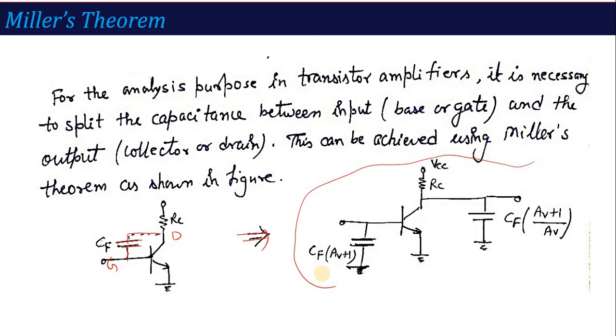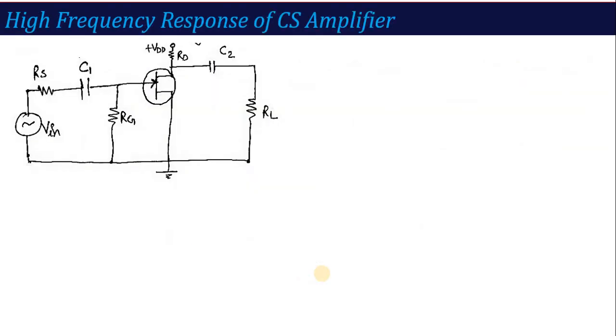After that, the main topic is our high frequency response of CS amplifier. The CS amplifier is available here. We have seen this circuit many times, so I think now you will recognize that this is the CS amplifier. Here is the gate terminal, this is your gate resistor, this is your FET, this is your drain resistance. Capacitors are C1 and C2 coupling capacitors, input supply, R_S, supply voltage, and this is load resistor.